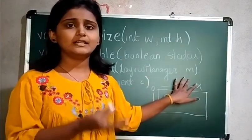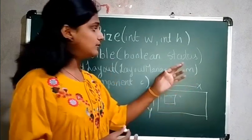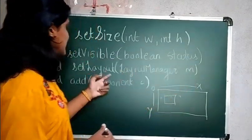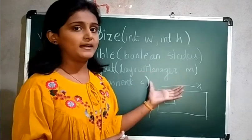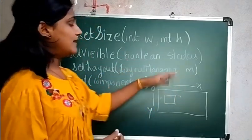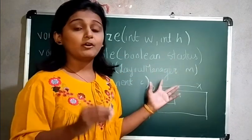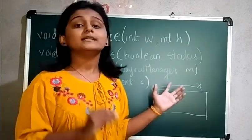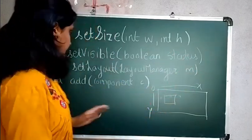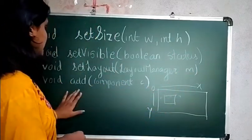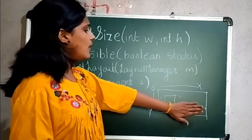The next one is setLayout(LayoutManager). As we see different layout managers, as per the requirement of the user we are going to use this method and set the layout manager. If you don't want one, you can pass null here. The default layout manager is FlowLayout.